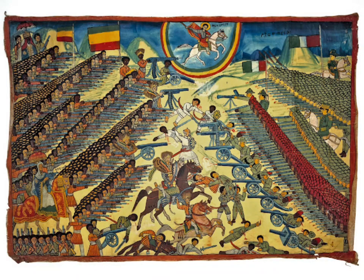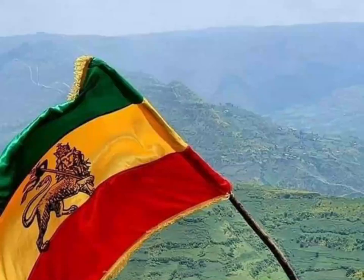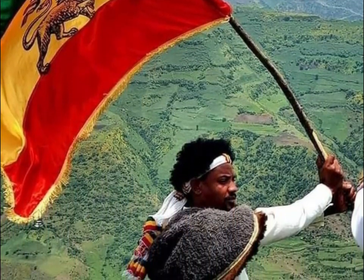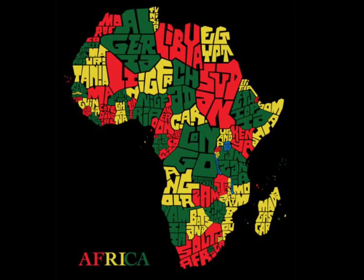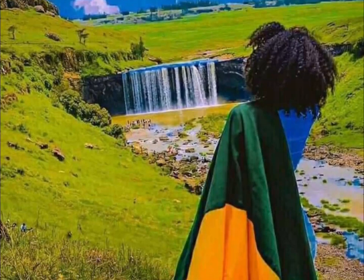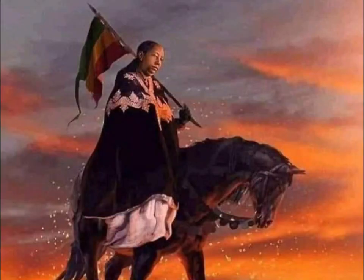As the only African state that resisted modern European colonialism, having defeated the Kingdom of Italy in 1896, green, yellow, and red — the colors of the flag of Ethiopia — have come to represent the pan-Africanist ideology. Numerous African countries have adopted the colors into their national flags, and they are similarly used as a symbol by many pan-African organizations and the Rastafari movement. Green, yellow, and red are now found on the national flags of many African nations, borrowed from the flag of Ethiopia.